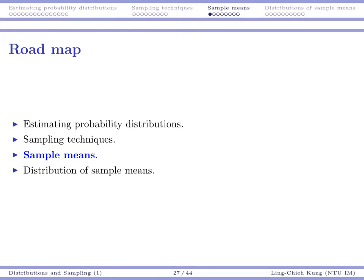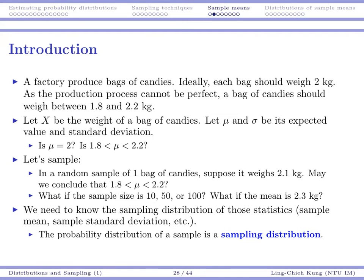Next, we're going to talk about sampling distributions, specifically sample means. Consider the following story: suppose I run a factory and produce bags of candies. Ideally, each bag should weigh 2 kilograms. Because my production process is probably not perfect, there may be some fluctuation. I still hope the process is under control, so a bag of candies should weigh between 1.8 and 2.2 kilograms — some fluctuation, but not too serious.